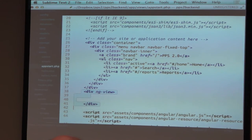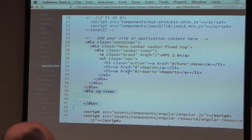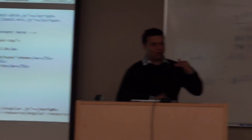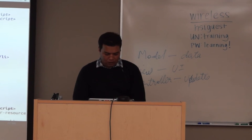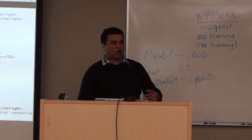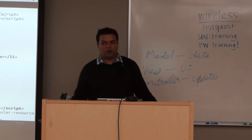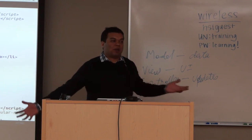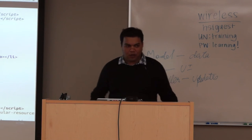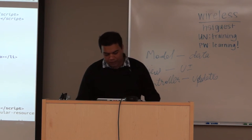Everything on top of that div is the nav bar you saw in the browser — home, search, reports. Everything below could have a footer or something else, like a Google Maps API call or any other content I want there.